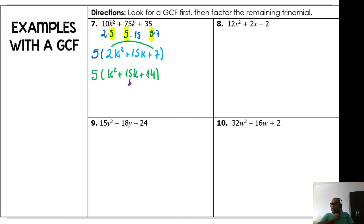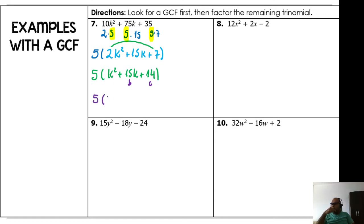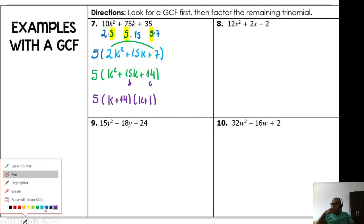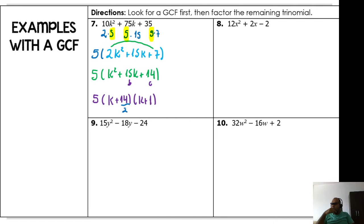I need a number times another number that gives 14, and the same two numbers add to 15. Which numbers have a product of 14 and a sum of 15? Two times 7 is 14 but 2 + 7 = 9, not 15. The answer is 14 and 1! So the factors are (k + 14)(k + 1). Now divide both by the number we slipped, which was 2: divide by 2 and divide by 2.